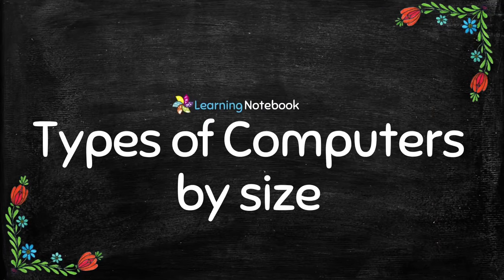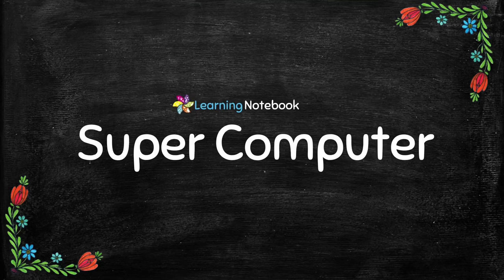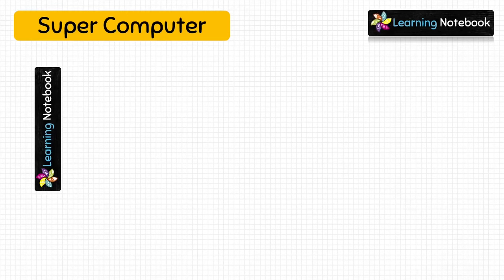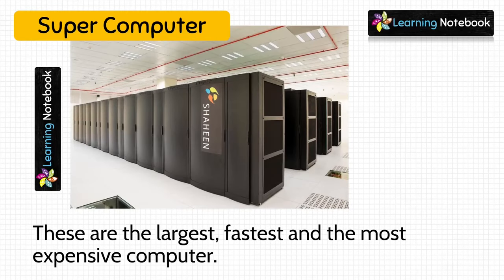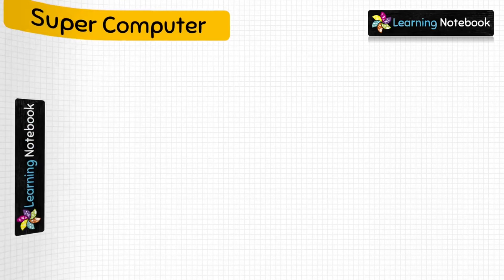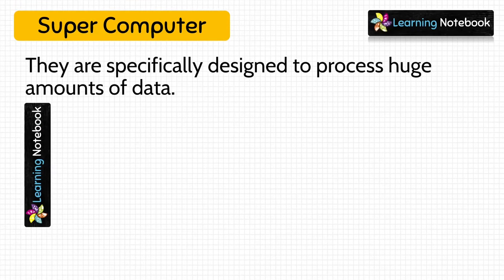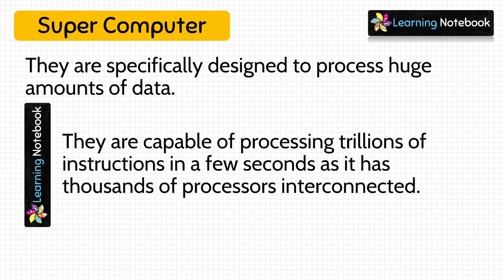First, we are going to learn about types of computers on the basis of size. The first such computer is supercomputer. Supercomputers are the largest, fastest, and the most expensive computers. As you can see in this picture, these computers are largest and thus they are not portable. Supercomputers are specifically designed to process huge amounts of data — they are very powerful machines capable of processing trillions of instructions in a few seconds, as a supercomputer has thousands of processors interconnected.